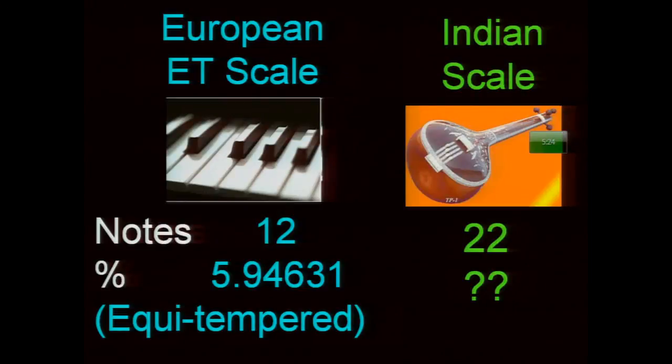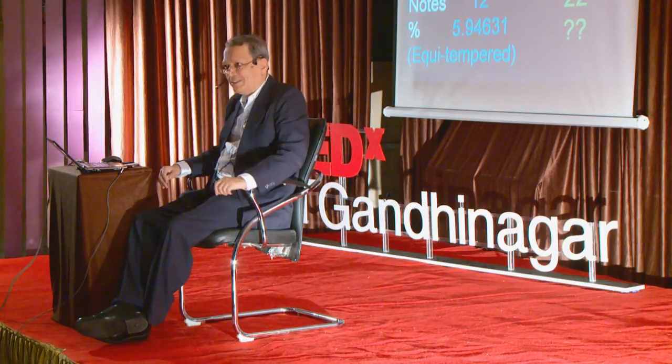This European equitempered scale consists of twelve notes within an octave, placed precisely at a 5.94631% increase in frequency over every note — hence we call it equitempered. In contrast, the Indian scale, about two thousand years old and documented by Bharata in the Natya Shastra, consists of 22 natural Shrutis or natural Swaras.